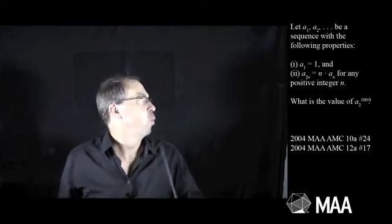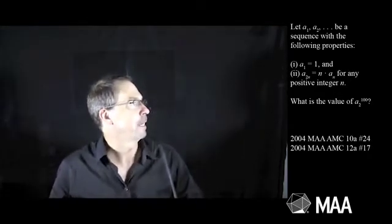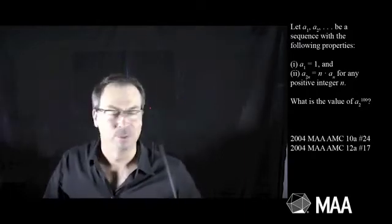Let a₁, a₂, et cetera, be a sequence with the following properties: (1) a₁ is 1, and (2) a₂ₙ is n times aₙ for any positive integer n.